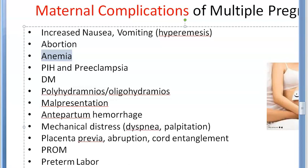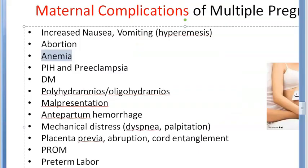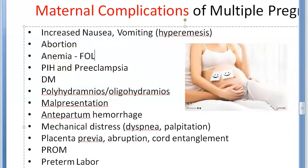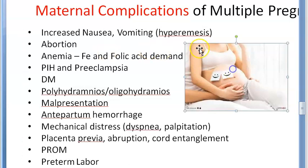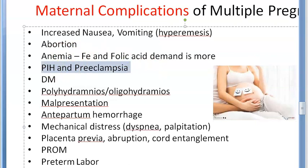Why does anemia occur? There is no blood loss as such, but the twins will have more iron and folic acid demand. When folic acid is pulled away from the mother, she can develop anemia. So basically iron and folic acid demand is more because of two fetuses.